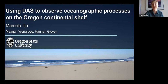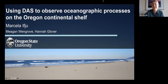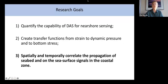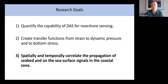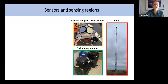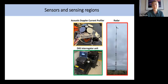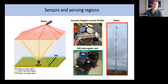My name is Marcella, and I am a first-year PhD student working with Megan and Hannah, where we are using DAS to observe different oceanographic processes in the ocean. Our research group has three overarching goals: first, to quantify the capability of DAS for nearshore sensing; second, to create a transfer function from dynamic pressure to strain; and third, to spatially and temporally correlate the propagation of seabed and sea surface signals. I will be focusing on research goal number three. To correlate signals between the sea surface with radar, the water column with the ADCP, and the seafloor with DAS, we used these instruments in the Florence, Oregon deployment.